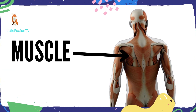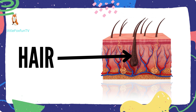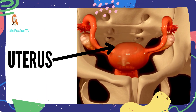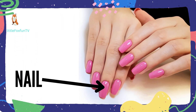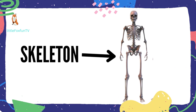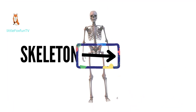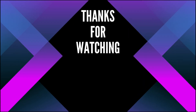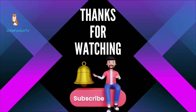Muscle. Number 28: Hair. Number 29: Uterus. Number 30: Nail. Number 31: Skeleton. Number 32: Pancreas.